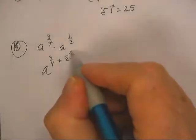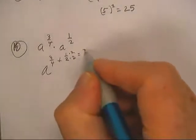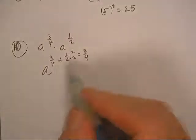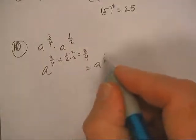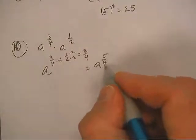Well, if I multiply up and down over here by 2, I get 2 fourths for that one. 3 fourths and 2 fourths is going to be a to the 5 fourths.